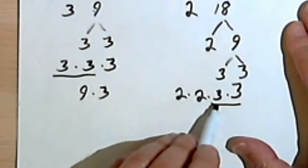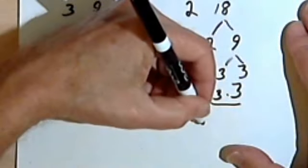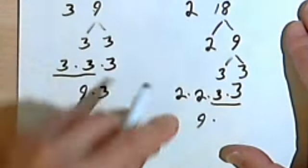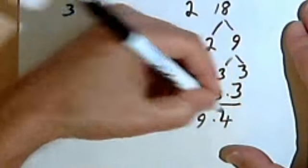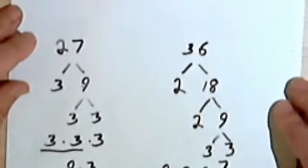And this 2 times 2 times 3 times 3, I'm going to write as 9 times... the 2 times 2 is 4, so it'll be 9 times 4. So now I'm ready to go back to my problem.